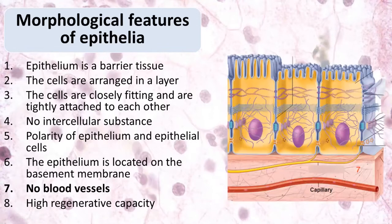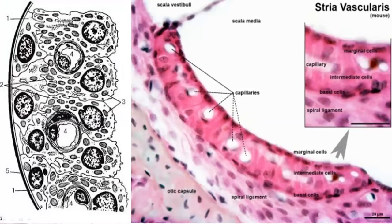Another feature is that epithelium has no blood vessels. Blood vessels are absent inside the epithelium, but they are located in the underlying connective tissue. Capillaries in the underlying connective tissue provide nutrition for the epithelium, and epithelial cells receive nutrients via diffusion from the capillaries. One exception is the stria vascularis of the inner ear, where epithelial cells have capillaries between them to provide production of the endolymph — but this is the only exception from the rule.